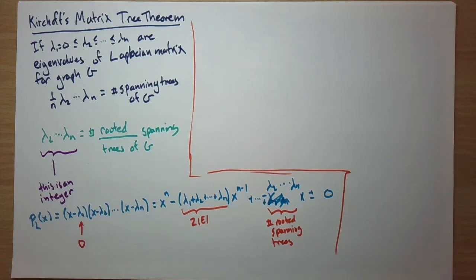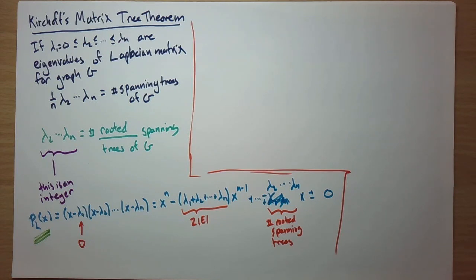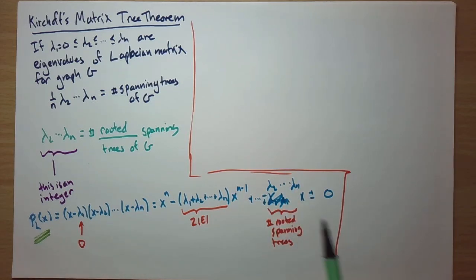That's how we know the product of non-trivial eigenvalues is an integer: the Laplacian has all integer entries, so its characteristic polynomial has all integer coefficients, and therefore the coefficient of x — which equals the product lambda_2 · ... · lambda_n — must be an integer.